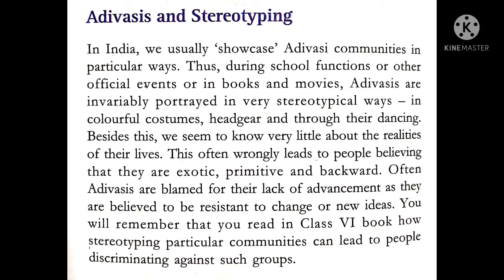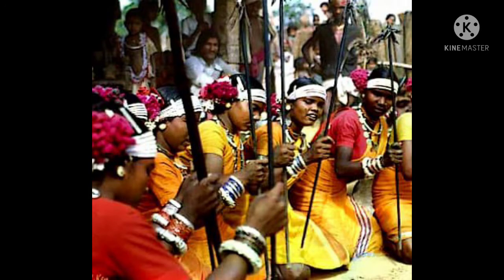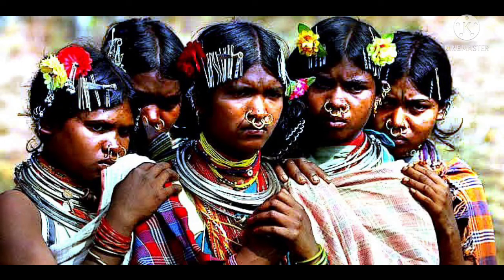In India, we usually showcase Adivasi communities in very particular ways. During school functions, official events, or in books and movies, Adivasis are invariably portrayed in very stereotypical ways — like wearing colorful costumes, headgears, and through their dancing. Taking the example from the book about Helen and Soma, a fictional story from the previous video, Helen questions why Adivasis are shown only as dancing and wearing colorful costumes.